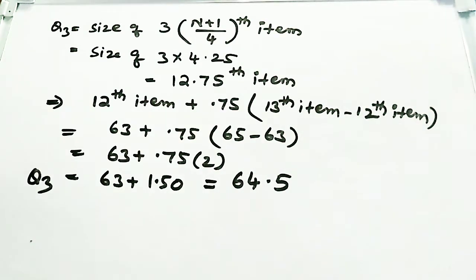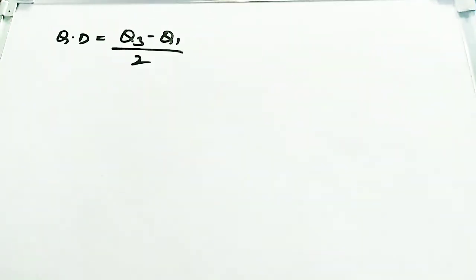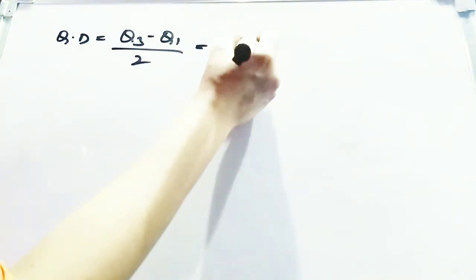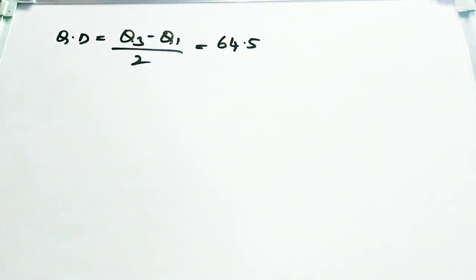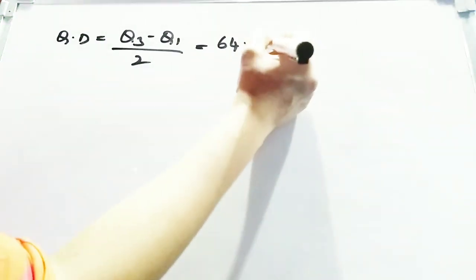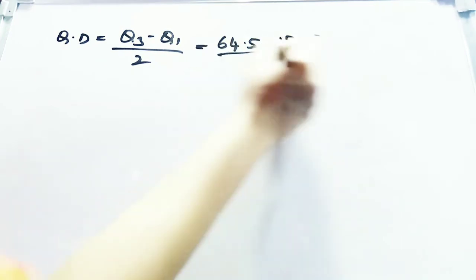You have calculated Q1 and Q3. Now substitute them into the quartile deviation formula: QD = (Q3 − Q1) / 2. Q3 is 64.5 and Q1 is 15.25. So QD = (64.5 − 15.25) / 2.